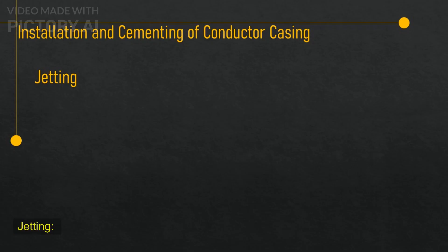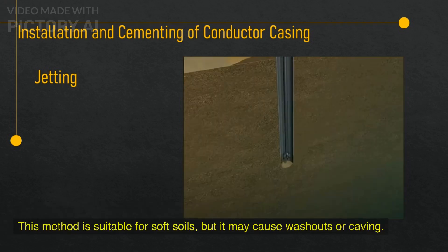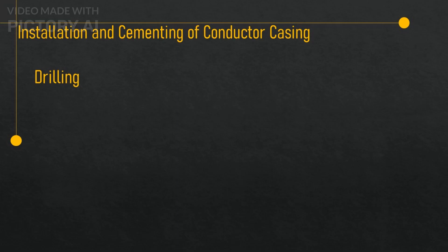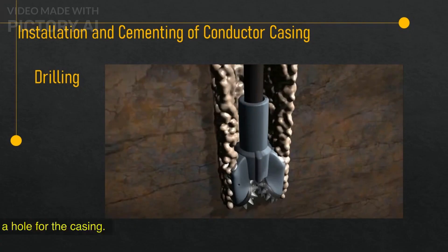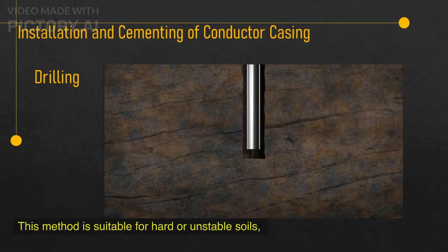Jetting — this involves using high-pressure water jets to erode the soil and create a hole for the casing. This method is suitable for soft soils, but it may cause washouts or caving. Drilling — this involves using a drill bit and a drill string to drill a hole for the casing. This method is suitable for hard or unstable soils, but it may require more time and equipment.